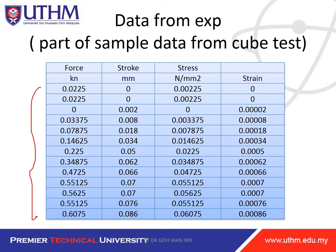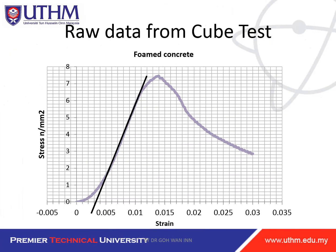Now I'll show a data example from the experiment — this is just part of the result, not complete. The force is applied gradually until failure and softening, and the stroke is the equivalent vertical displacement applied. From the force and stroke we convert to stress and strain. From there you plot and get the graph from the raw data from the cube test.